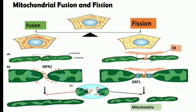Mitochondrial fission and fusion processes are both mediated by large GTPases in the dynamin family that are well conserved. GTPases are a large family of hydrolysis enzymes that bind to the nucleotide GTP and hydrolyze it to GDP.